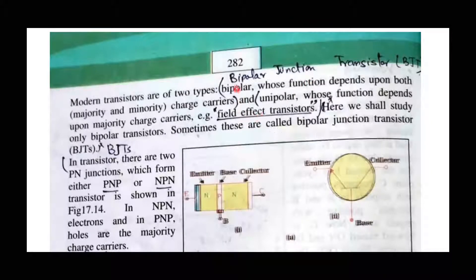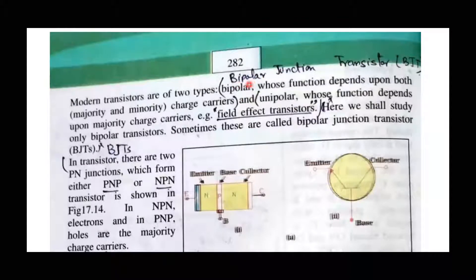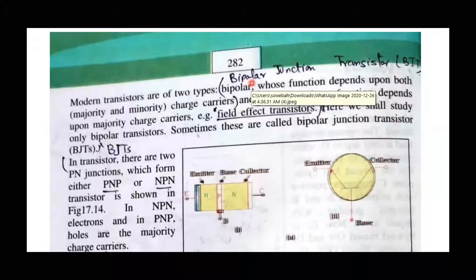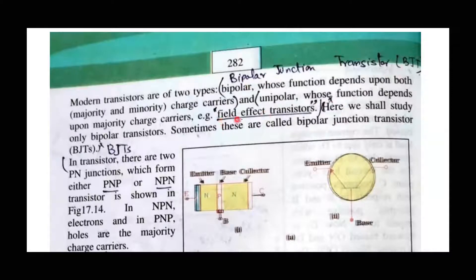Bipolar means two poles. It is bipolar because you have both positive and negative charges — two poles. You have both charge carriers, that is why it is known as bipolar junction transistors.